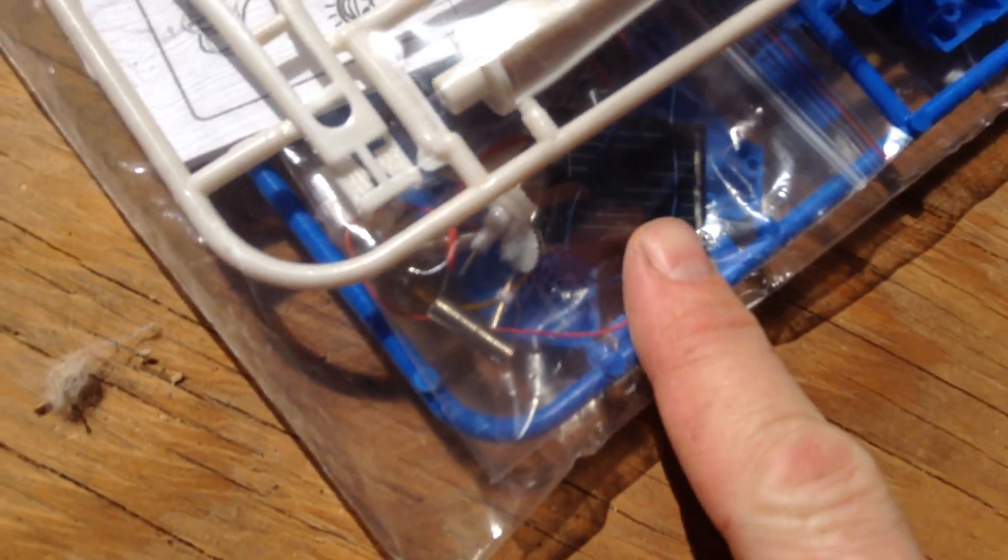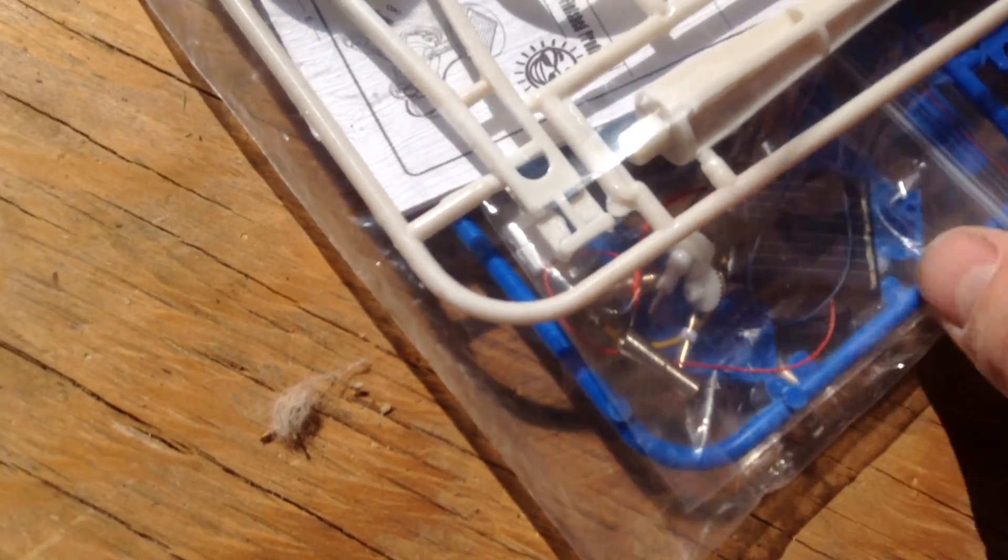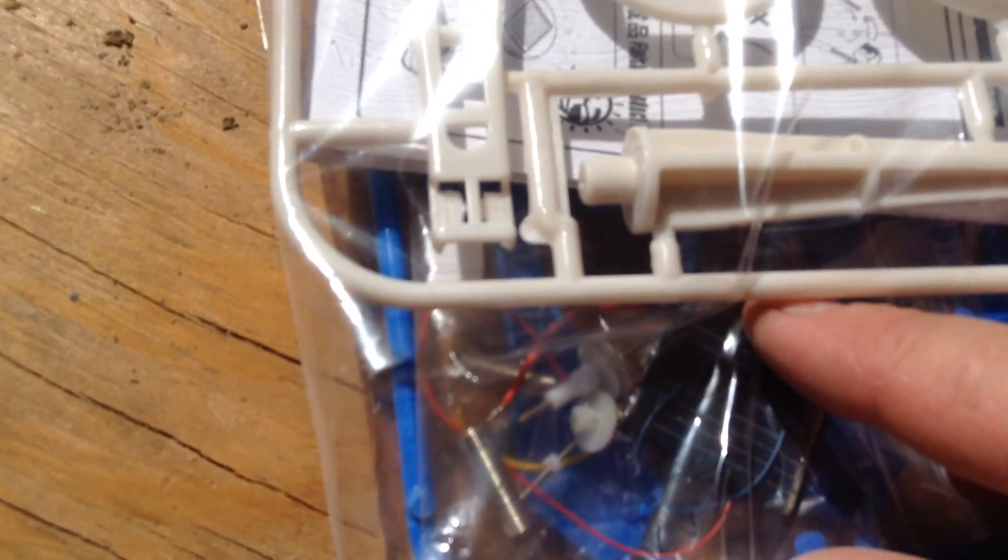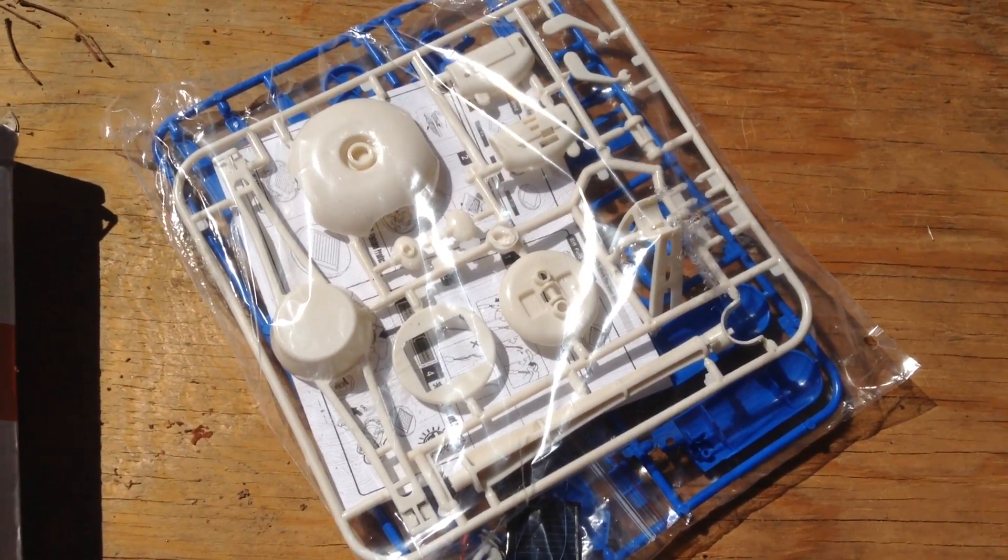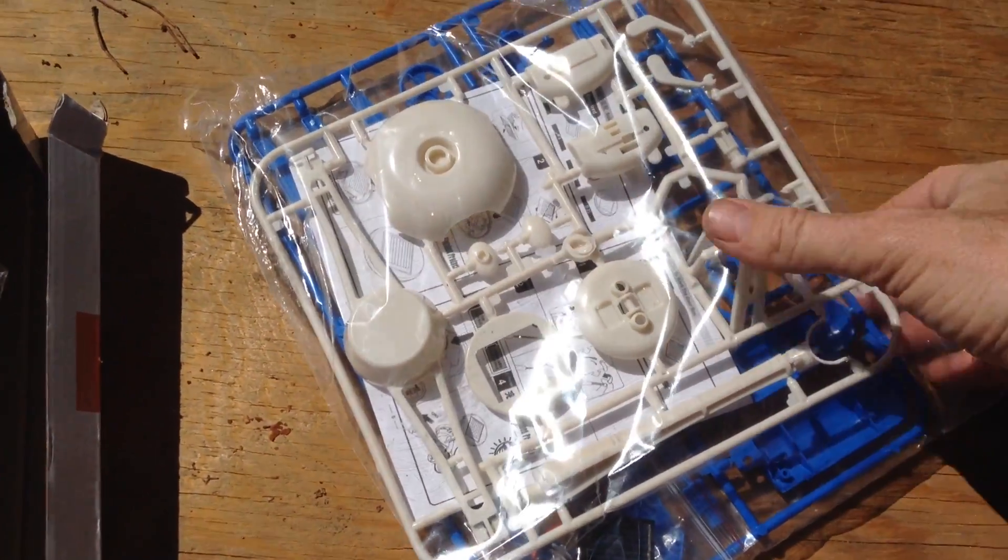And you see inside the kit here we've got an actual little solar panel, a little motor, little gears. So the kid really has to actually go in there, cut everything apart, fit it together, and it does come with instructions as well.